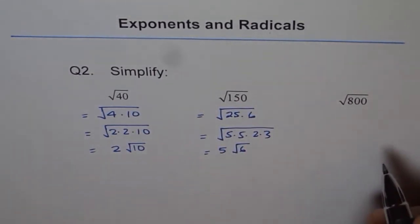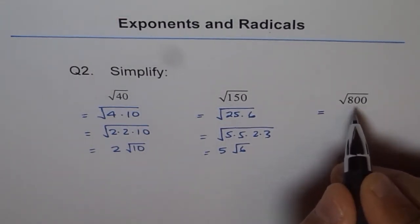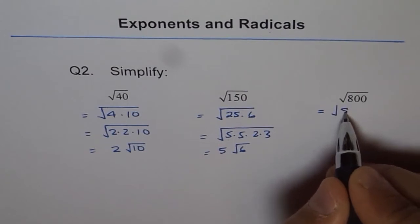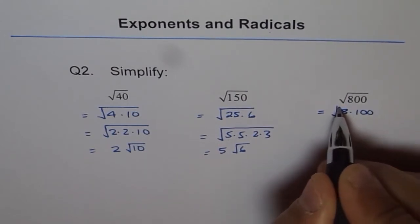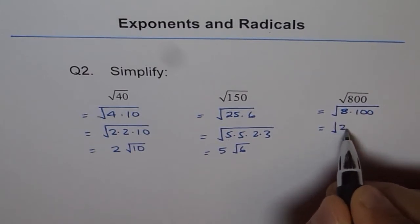Now, how about square root of 800? That's 8 times 100. We can write 8 as 2 times 4, and 100 as 10 times 10.